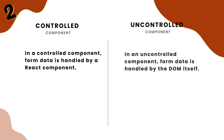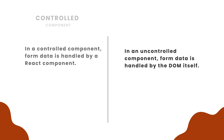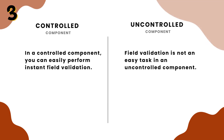Number 2: in a controlled component, form data is handled by a React component, while in an uncontrolled component, form data is handled by the DOM itself. Number 3: in a controlled component, you can easily perform instant field validation, while in an uncontrolled component, field validation is not an easy task.